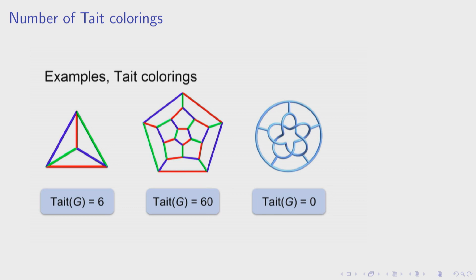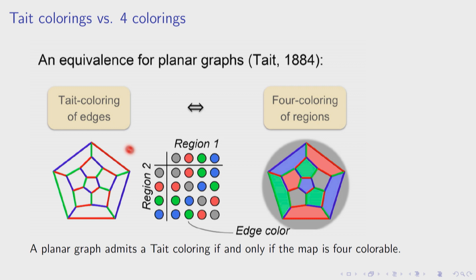Tait showed that Tait colorings are equivalent to four-coloring the regions of a planar graph. You start with one region called gray, and each time you cross an edge, if there's a Tait coloring you change it according to a certain pattern. So if two regions are four-colored, the edge between them will be colored accordingly — if green and red are adjacent, the edge will be colored blue. This actually requires a little bit of topology — that the plane is simply connected — to make this work.